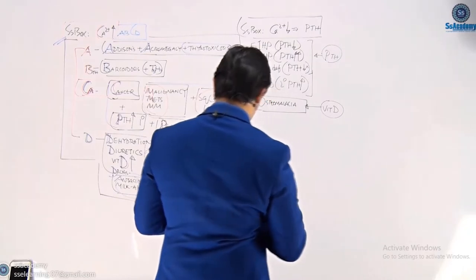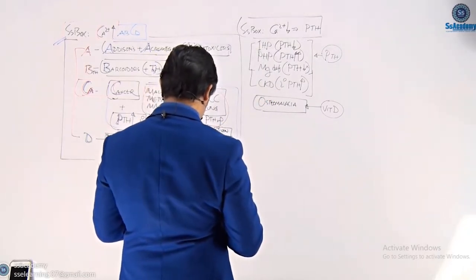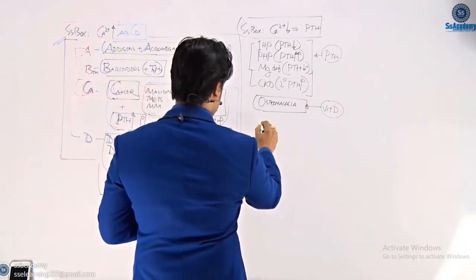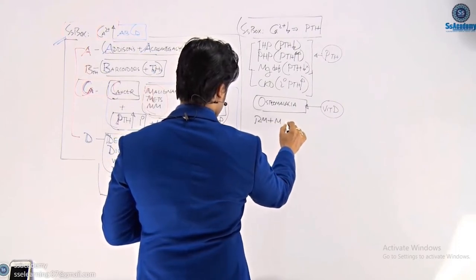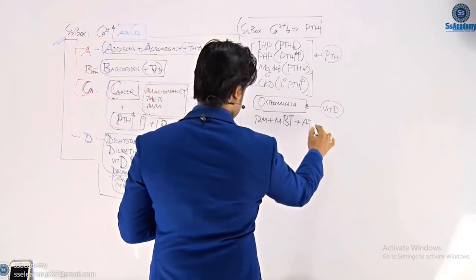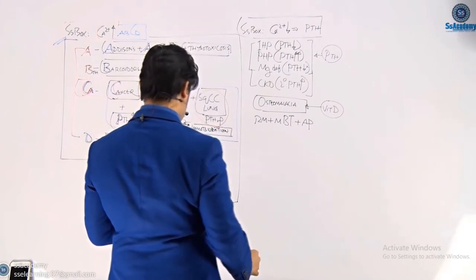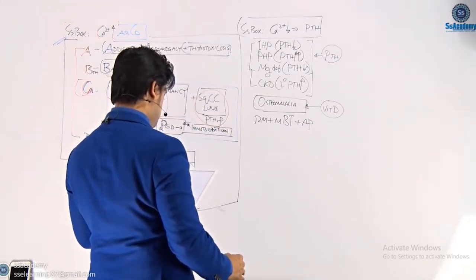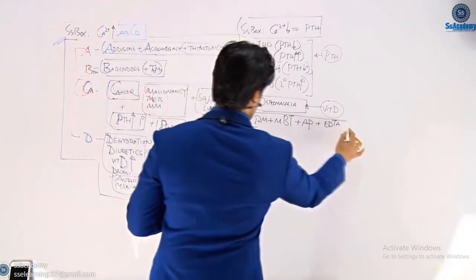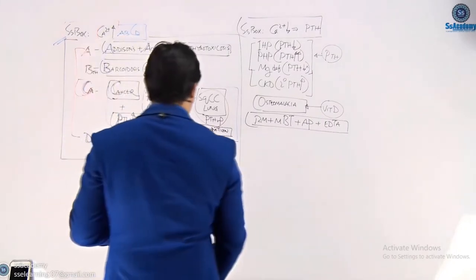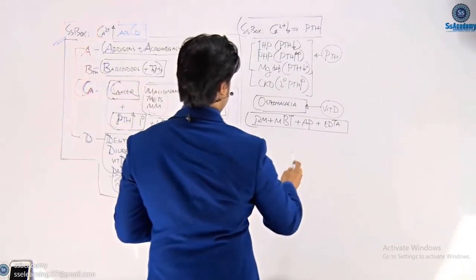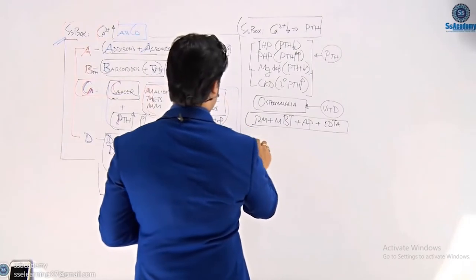Other causes of hypocalcemia: rhabdomyolysis in initial stages, massive blood transfusion, acute pancreatitis, and contamination of blood samples with EDTA. Hypercalcemia is a cause of acute pancreatitis, which then results in hypocalcemia — so acute pancreatitis causes hypocalcemia as a consequence.